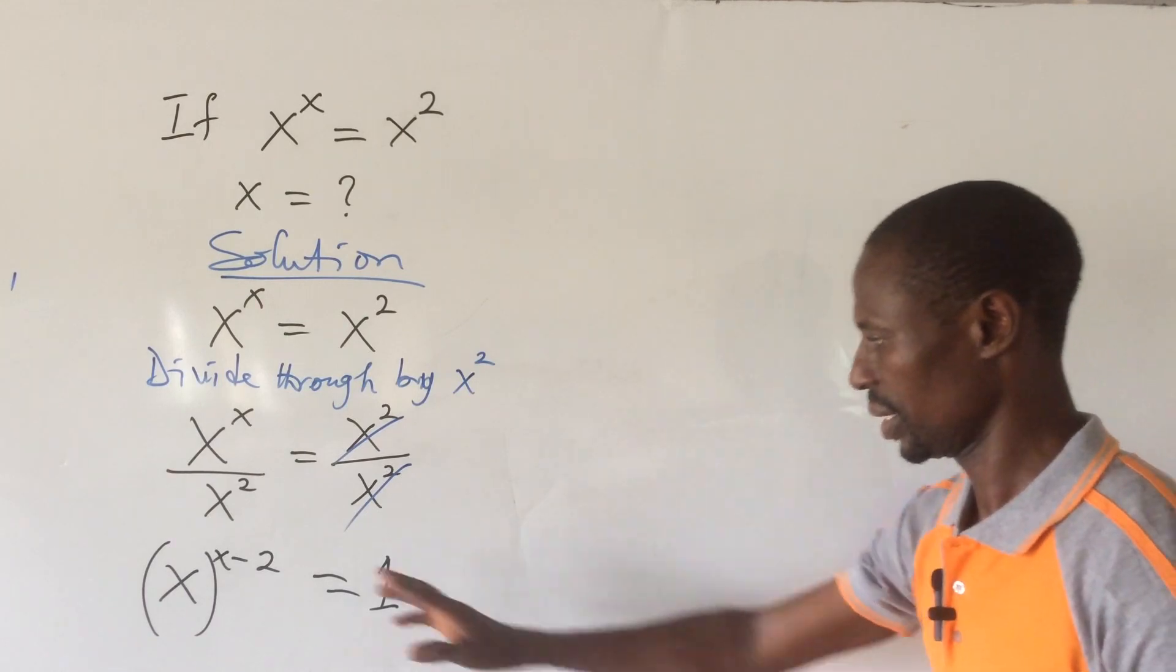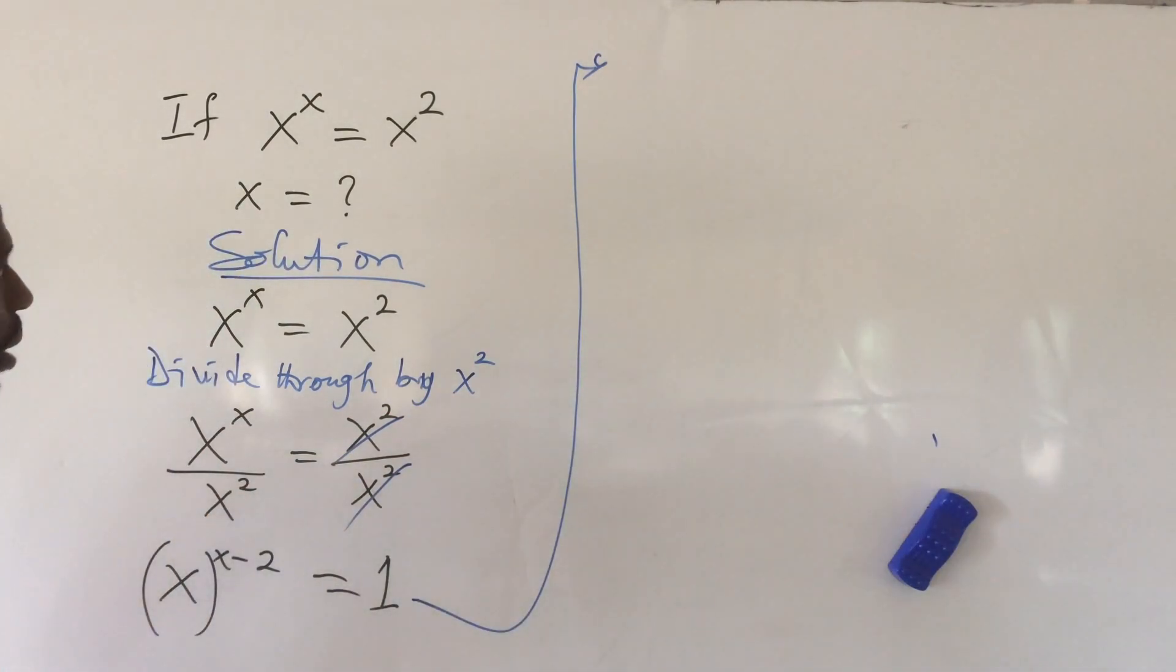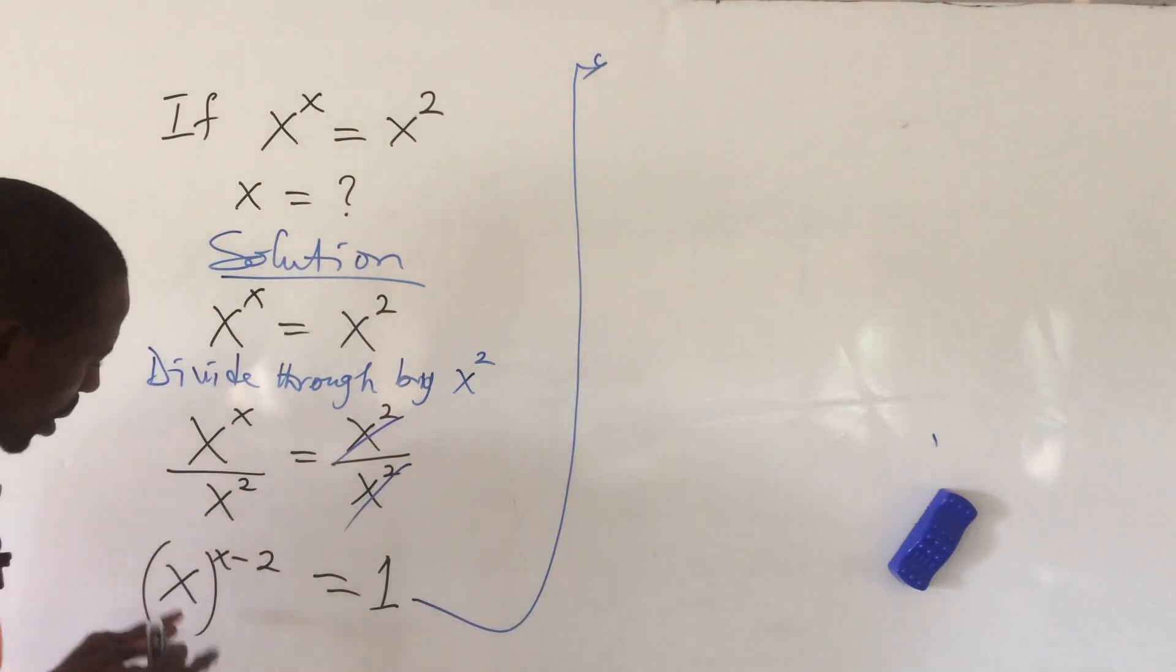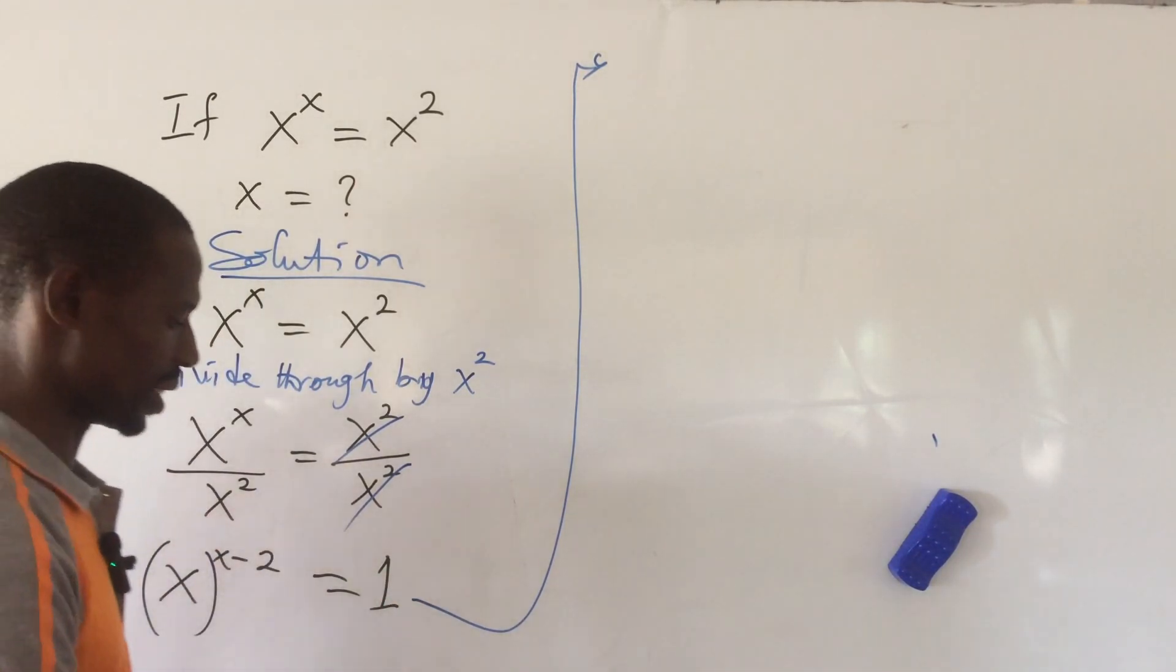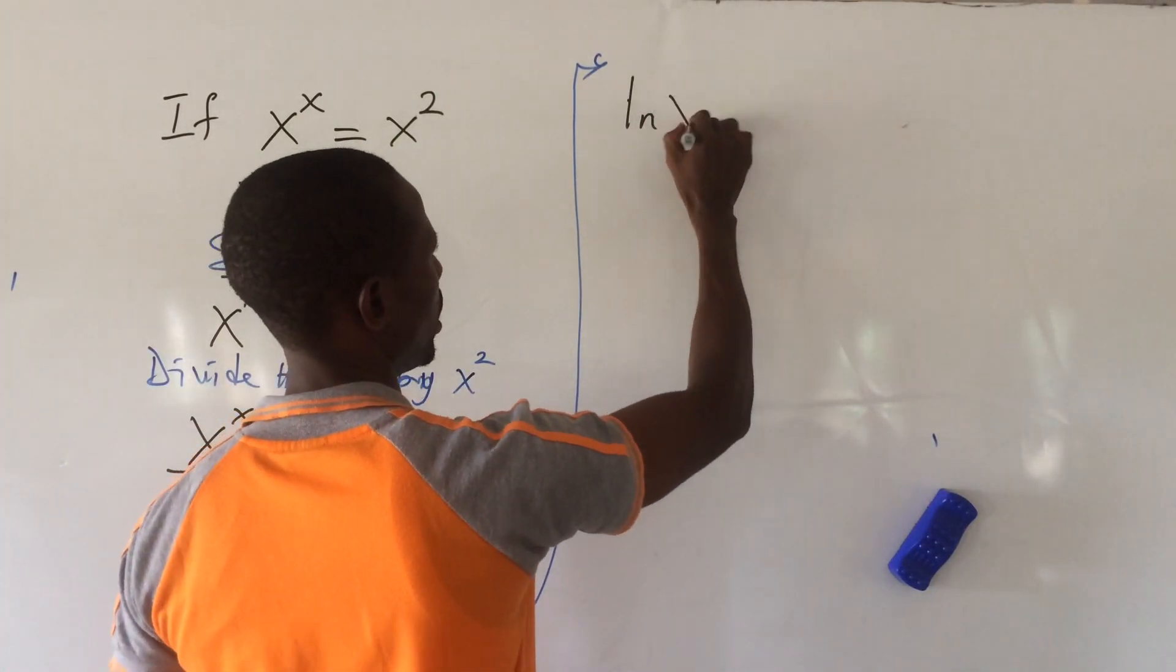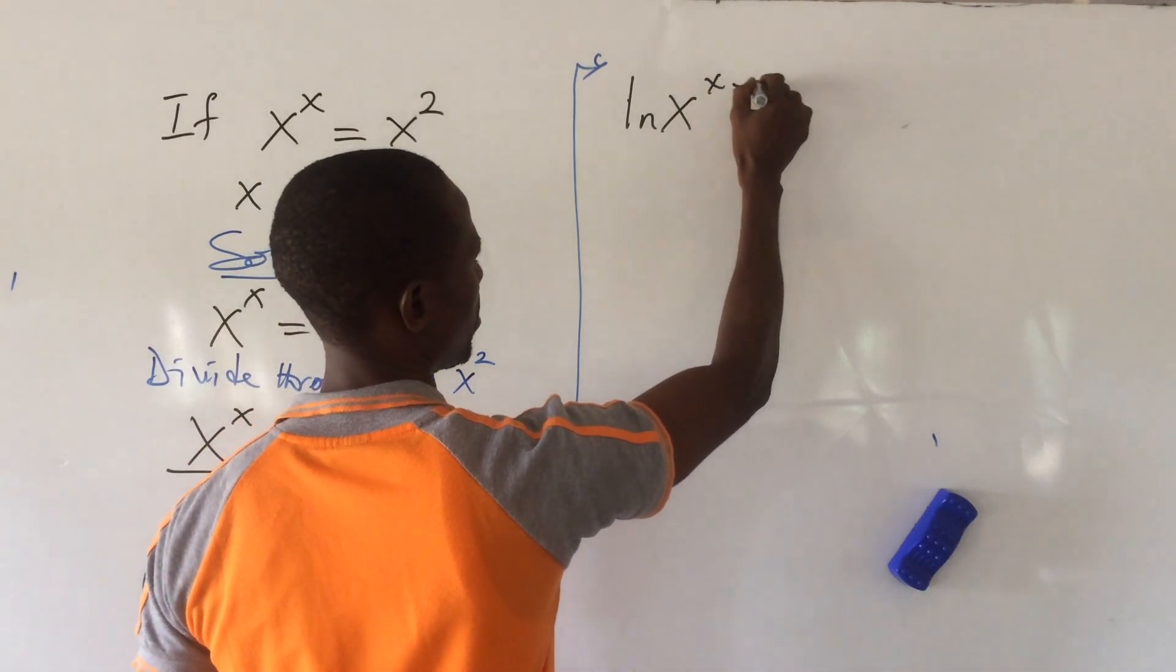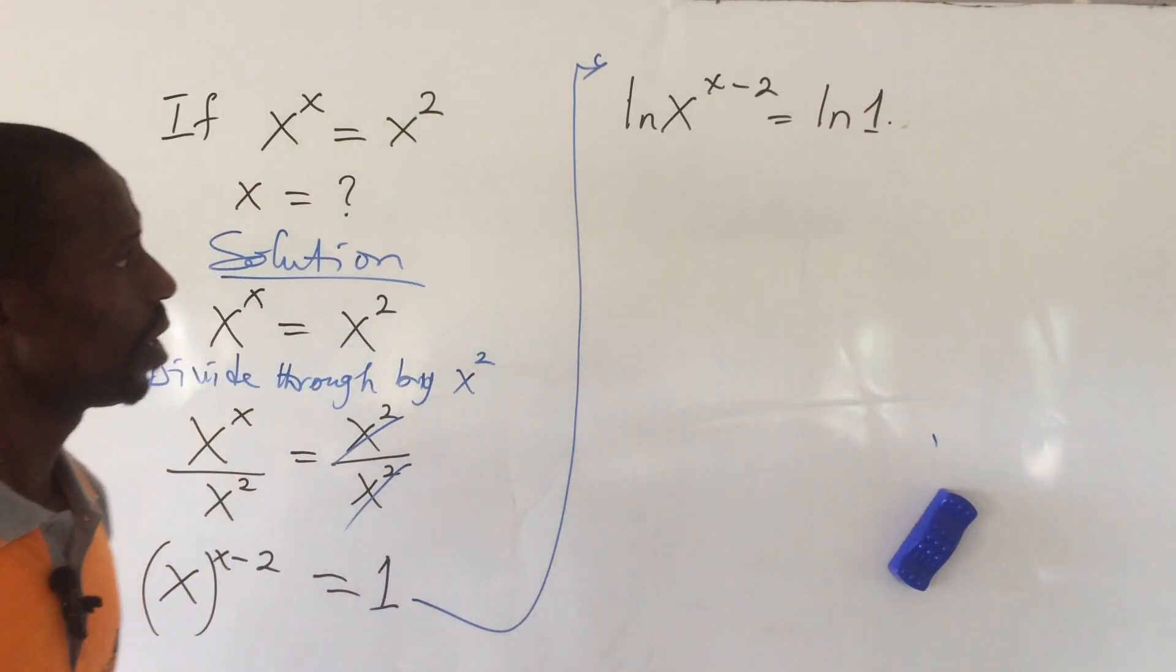All right. Now that we have this, let's proceed. So from here, look at this guy here. How do we handle this? We can introduce natural log to this. Okay. So if I introduce ln to this side and at the same time, introduce it to this other side, it will now become ln of x to the power of x minus 2 equal to ln of 1.